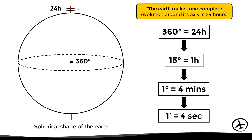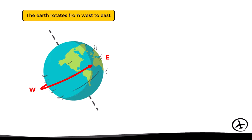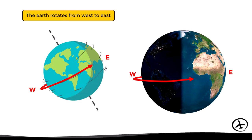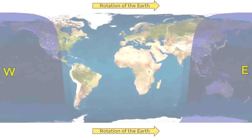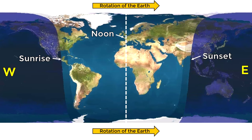To know if it is later or earlier at a point on Earth with respect to our position, we must take into account that the Earth rotates from west to east. In all places east of our position it will be later, while in places west of our position it will be earlier. If we are at a point in Africa where it is currently noon, this is more obvious from that perspective.